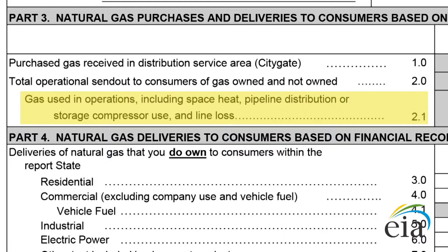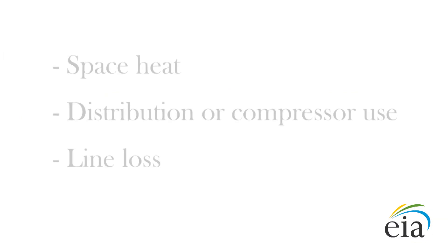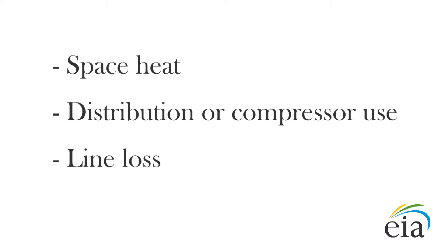Line 2.1 is for reporting gas used in operation. This value is the sum of three pieces: space heat, distribution or compressor use, and line loss. Typically, the largest piece is line loss.